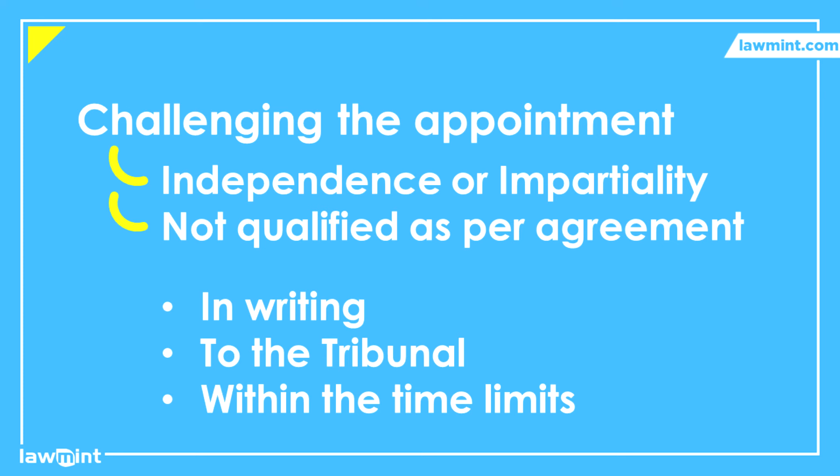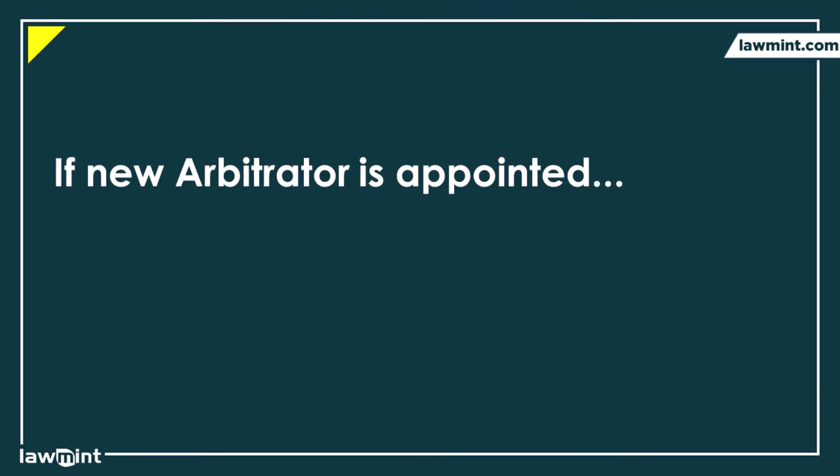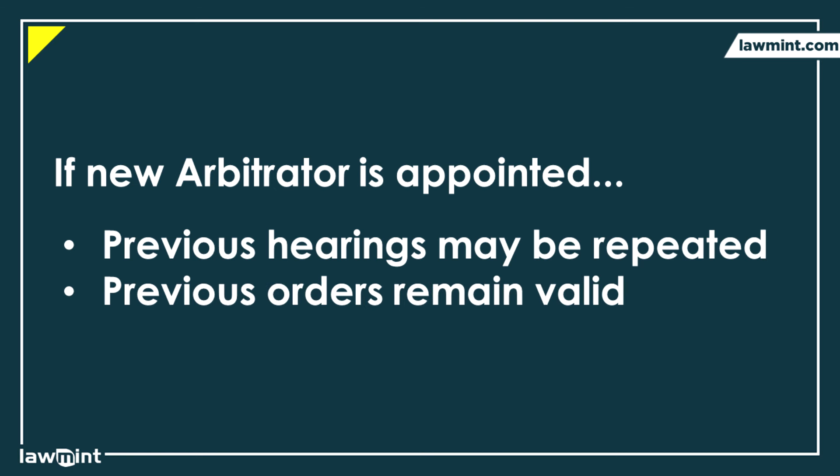Next, let us talk about the termination or substitution of an arbitrator. The mandate of an arbitrator can be terminated if he or she de jure or de facto becomes unable to perform his functions, or if he fails to act without undue delay, or he voluntarily withdraws from the role, or both parties mutually agree on termination, or the court takes a decision to terminate. When an arbitrator is terminated, a substitute shall be appointed according to the same rules applicable to the appointment of the original arbitrator. When an arbitrator is replaced, the previous hearings need to be repeated so that the new person can be brought up to speed. Any orders or rulings made by the arbitrator prior to termination will remain valid unless otherwise agreed to by the parties.